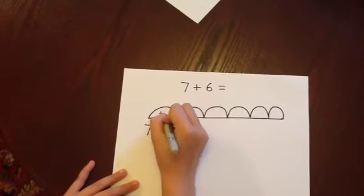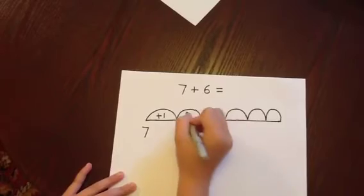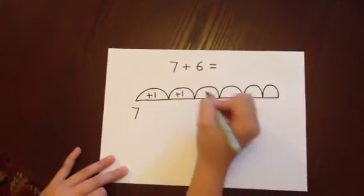Inside each jump, we write add one, as this is the amount we are adding on each time.